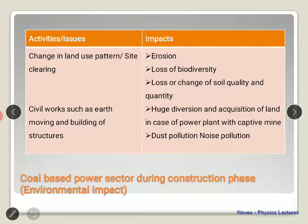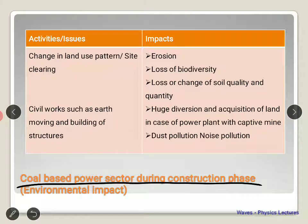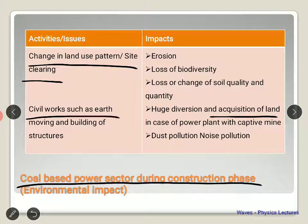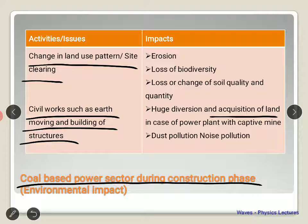If we look into the environmental effect for a coal-based power sector during the construction phase, a large amount of land needs to be procured — there is acquisition of land. The activities carried out during the construction phase include change in land use, site clearing, civil work, earth movement, and building of structures. If the land is not selected properly there will be erosion, and there will be a loss of biodiversity because a lot of water is also used.